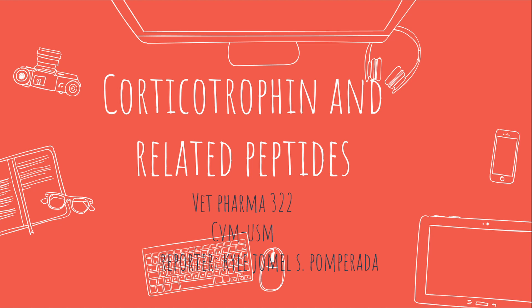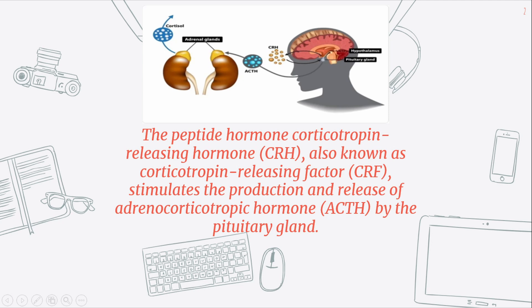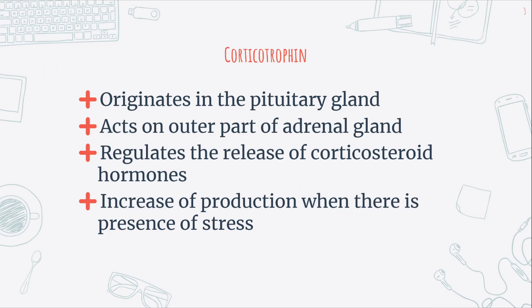Hello everyone. Today I will be talking about corticotropin-releasing hormone and other peptides related to it. To begin with, let us define what corticotropin is. Corticotropin is a hormone that originates in the pituitary gland. It acts on the outer part of the adrenal gland and plays a part in regulating the release of corticosteroid hormones. The production of corticotropin is increased when stress is present.